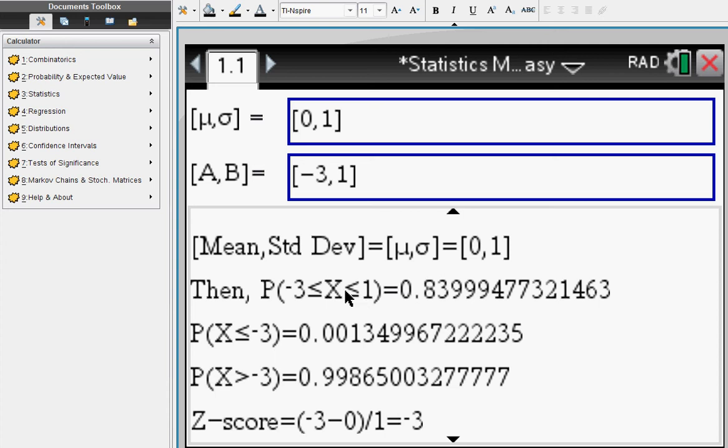If you want to know the cumulative normal distribution, let's say between negative 3 and 1, or between negative 2 and 1, you immediately get your answer.